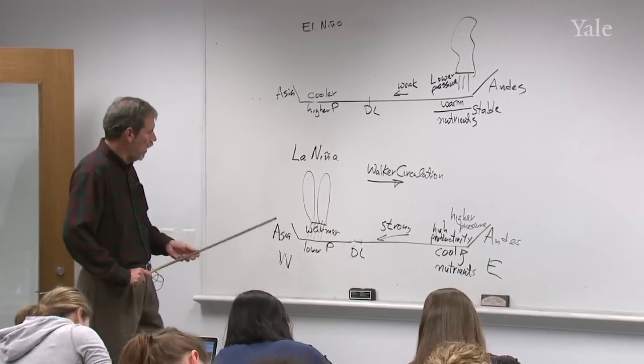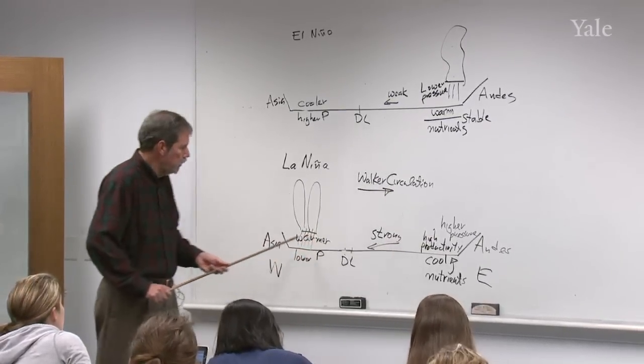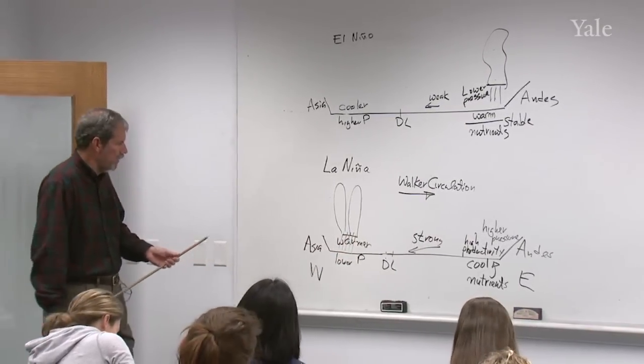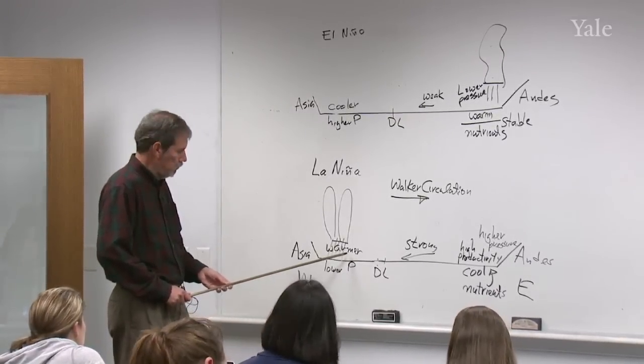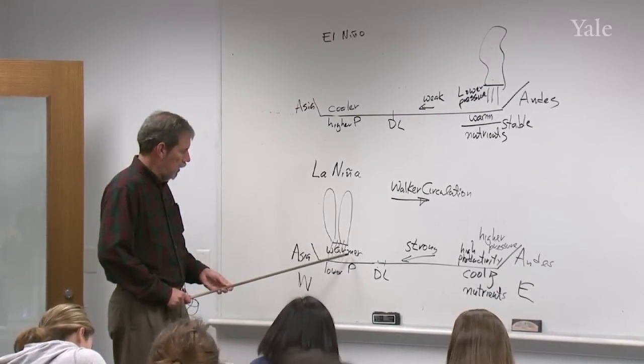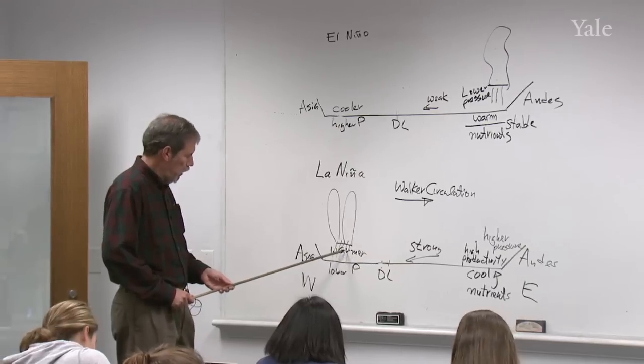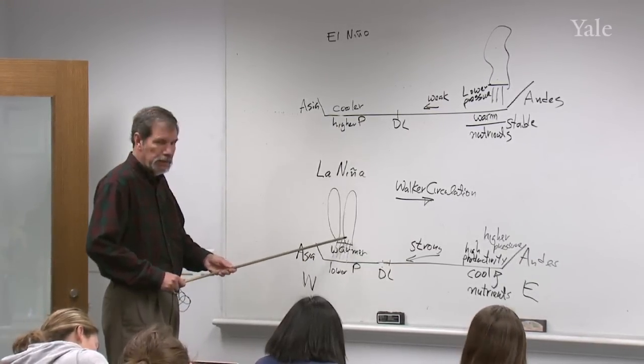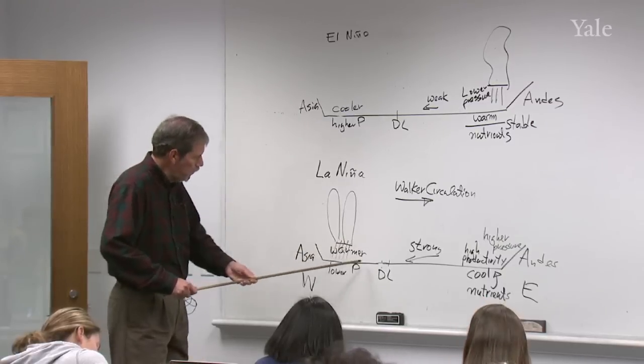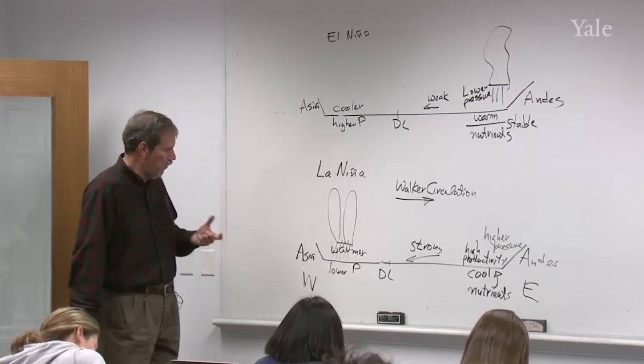So there's Asia on this side, the Andes in South America on this side. The international dateline would be somewhere in the middle, that'd be 180 degrees west or east longitude. And most of the time, you've got a situation that looks something like this. You've got very warm water in the western Pacific, warm air as well.